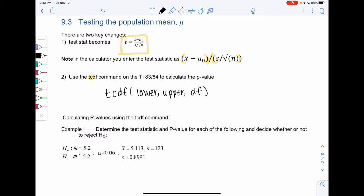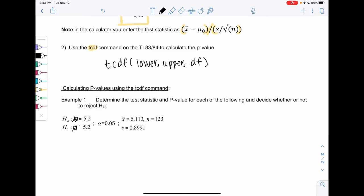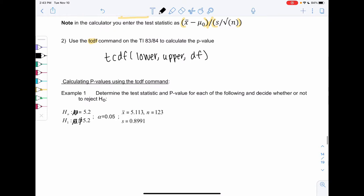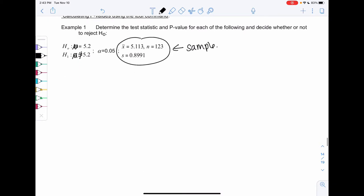Let's practice the formulas. We have mu equals 5.2 versus mu is not equal to 5.2 for our hypothesis. Alpha is 0.05, and our sample gave us x-bar is 5.113, a standard deviation of 0.8991, and n is 123. We have some data, we're trying to prove that the mean is not 5.2.